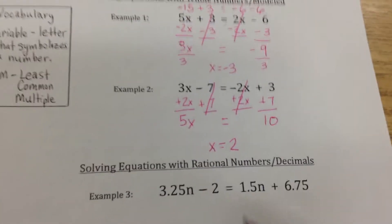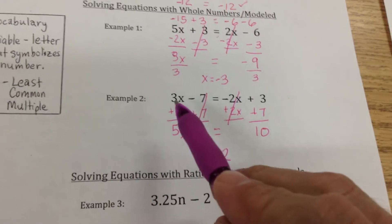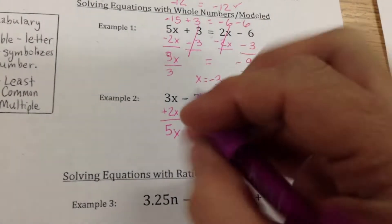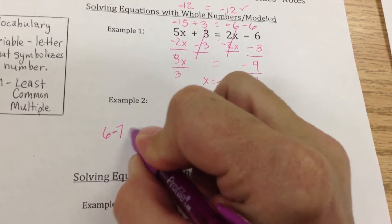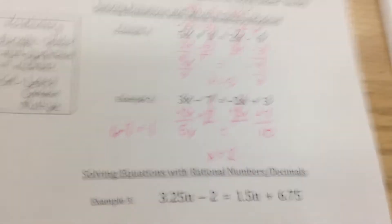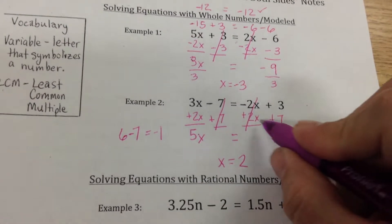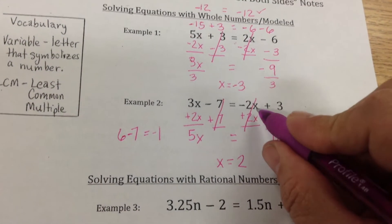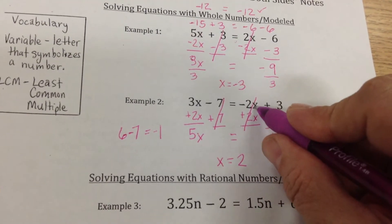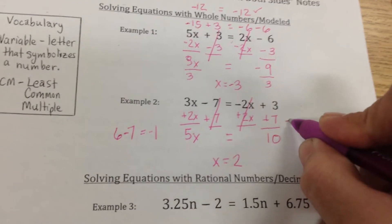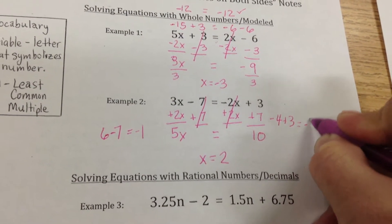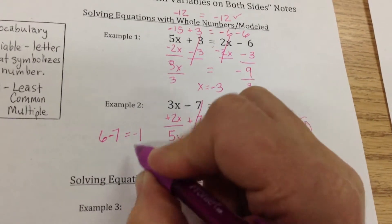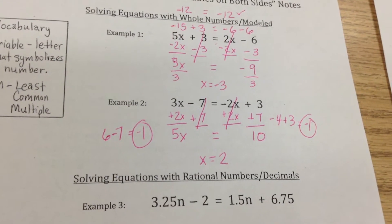I want to check my work. So 3 times 2 is 6, and 6 minus 7 equals negative 1 for this side. Over here, negative 2 times 2 is negative 4, and negative 4 plus 3 is also negative 1. Since I got the same answer on both sides, I know that I did that problem correctly.